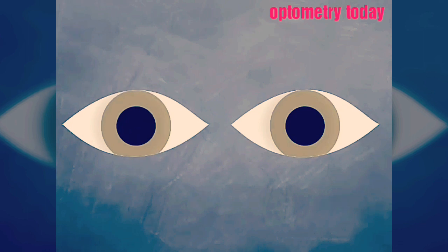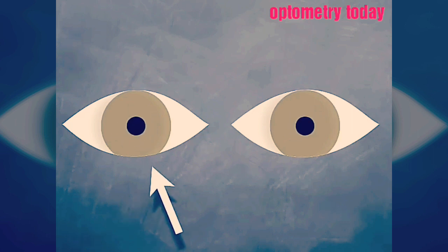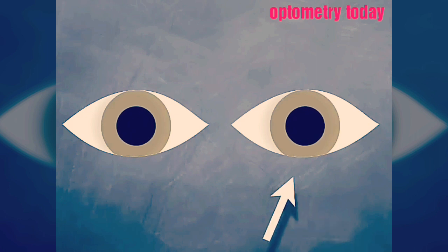Now check for a reaction to light in each eye, again with the lights off. Here, the normal pupils constrict briskly, then relax a little. They dilate again after the light is removed.